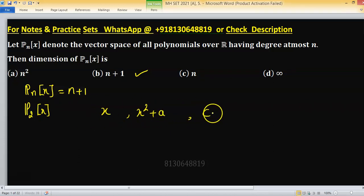This types of polynomials comes in P_2(x), degree at most 2, means degree may be 0, degree may be 1, and degree may be 2.